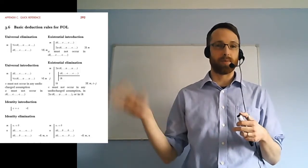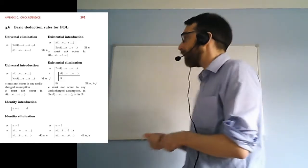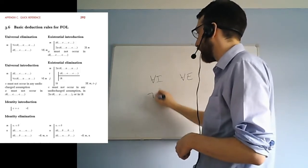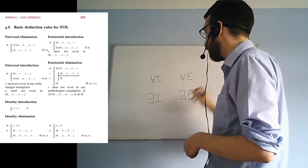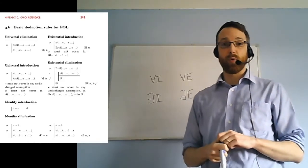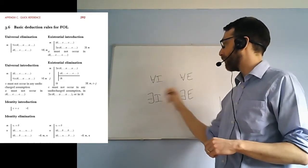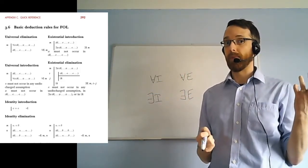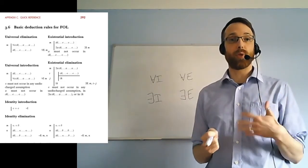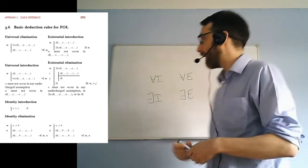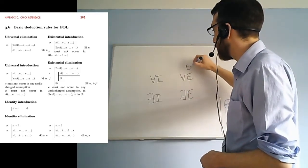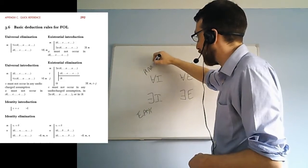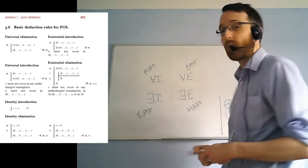Identity we'll see a little of in a minute. For the universal quantifier we have an introduction rule and an elimination rule, and likewise for the existential quantifier. Each of these pairs of rules — universal intro and elim, existential intro and elim — has one that's easy and one that's complicated. Universal elimination is easy, and existential introduction is easy. The other rules are harder, or at least more complicated.